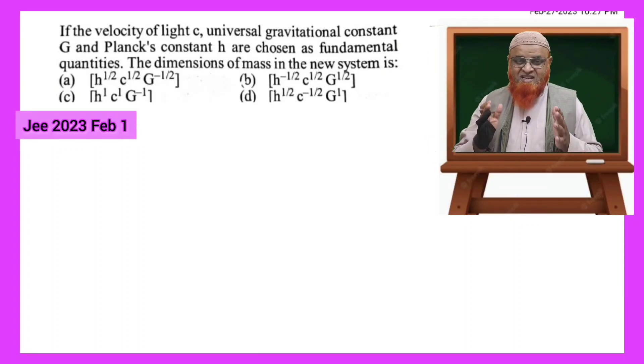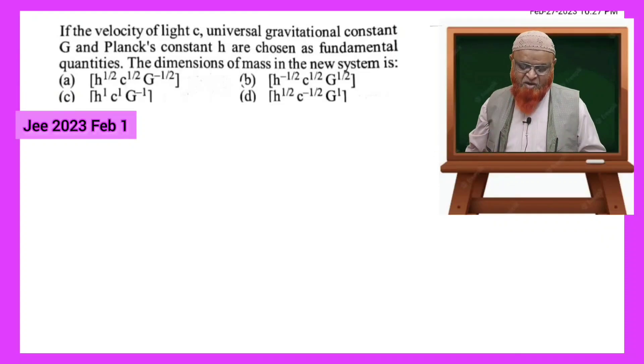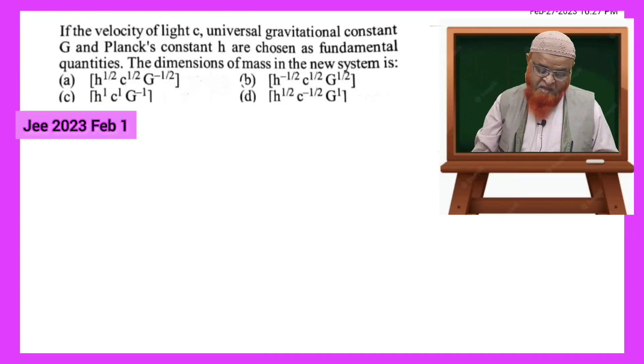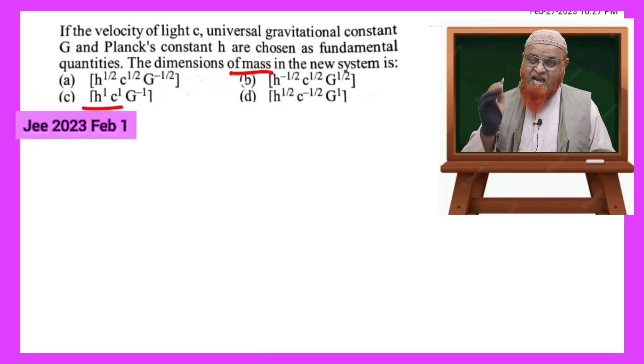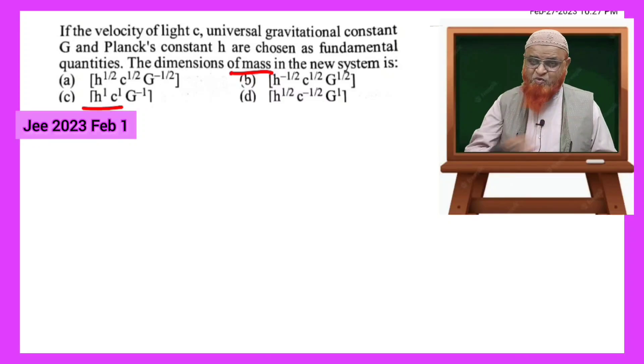This is the problem we are discussing without using dimensional formulas. Let us see how we are going to do this problem. He is asking us to find out the mass in terms of Planck's constant, velocity of light, and gravitational constant. Let us do this problem without using dimensional formulas in a fraction of seconds.